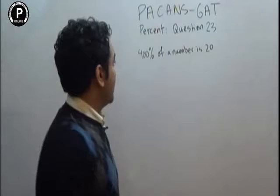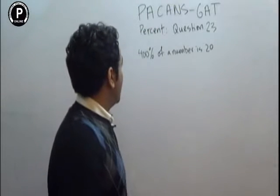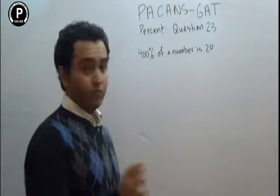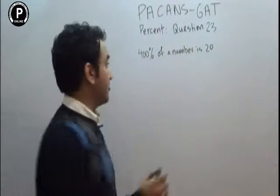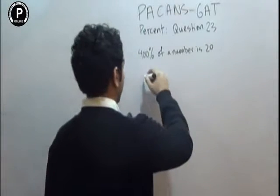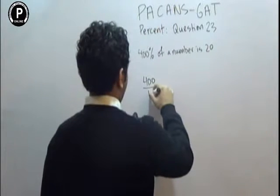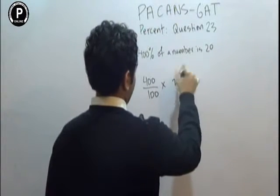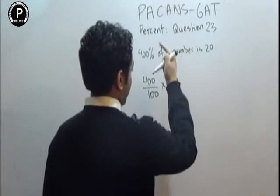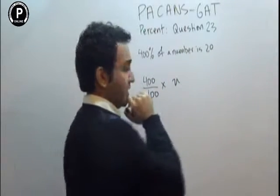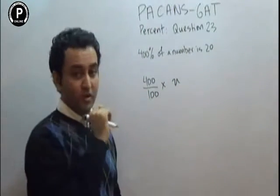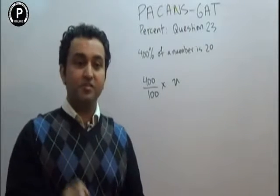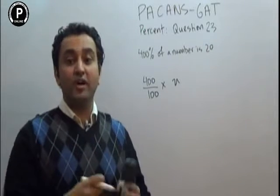Welcome to GAD. Percentage — question number 23. 400% means 4 over 100 times x, where 'of' means multiplication. Now we have to ask this question: the percentage will give you a question.